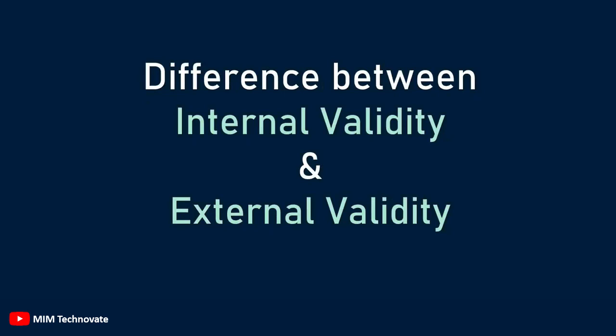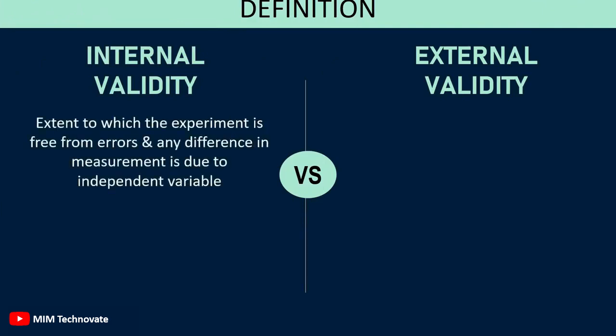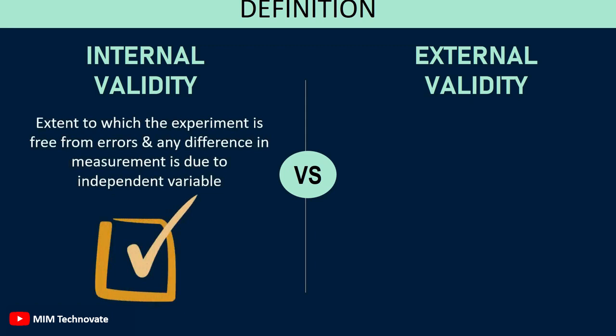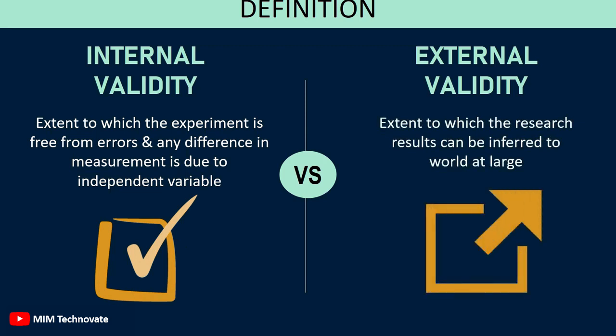The difference between internal validity and external validity. The extent to which the experiment is free from errors and any difference in measurement is due to the independent variable and nothing else is known as internal validity, whereas the extent to which the research results can be inferred to the world at large is known as external validity.